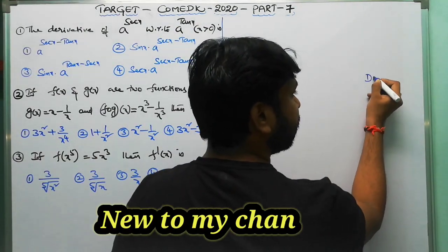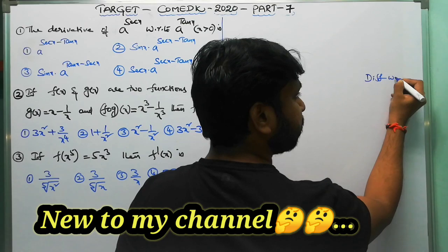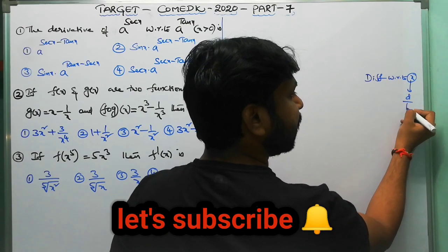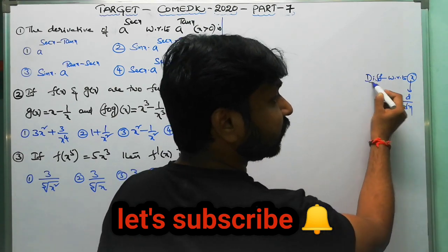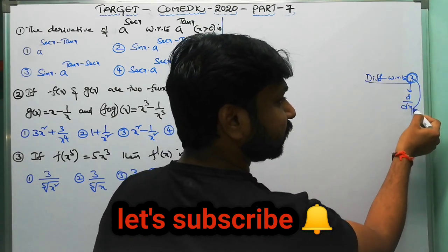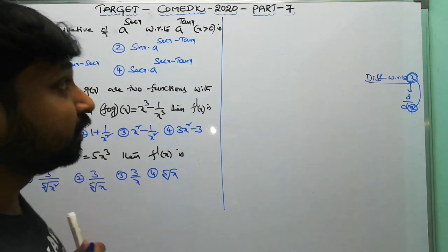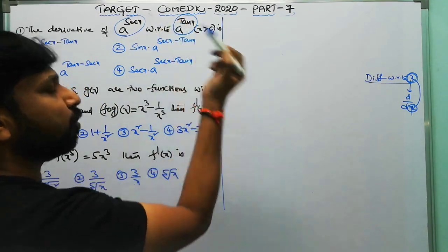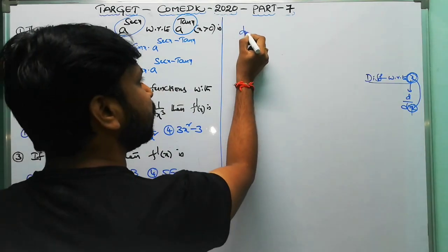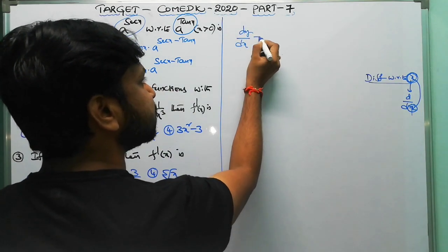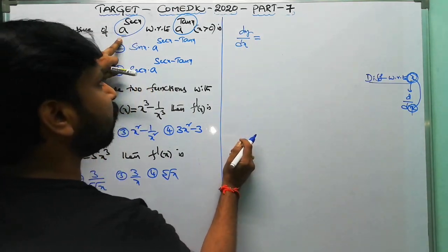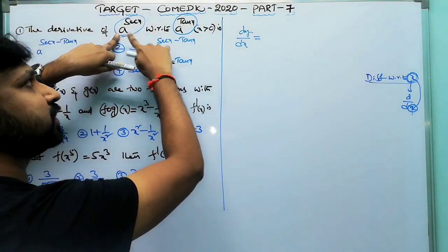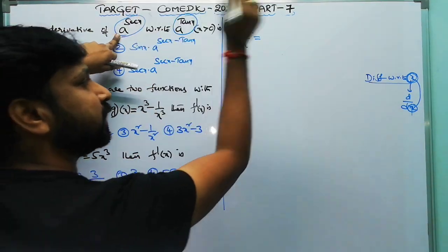Remember: differentiation with respect to x means applying d/dx. When finding the derivative of one function with respect to another, the target function goes in the denominator and the differentiating function in the numerator — giving dy/dx. So write a^(sec x) in the numerator and a^(tan x) in the denominator.